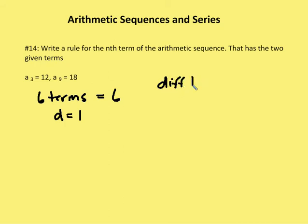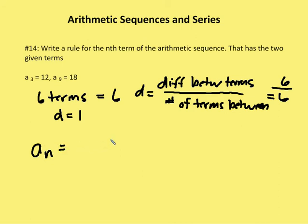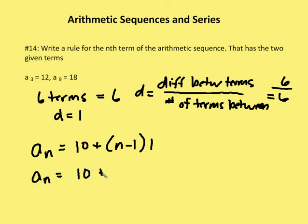The difference between the terms over the number of terms gives me six over six, so my common difference is equal to one. Now I want to write a rule: a sub n equals a sub one plus n minus one times the common difference of one. I figure out a sub one by subtracting two times the common difference of one from a sub three, which is 12, giving me 10. So the rule is a sub n equals 10 plus n minus one, which simplifies to a sub n equals nine plus n.